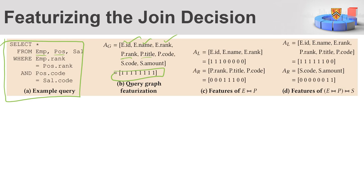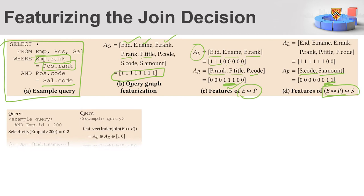The participating attributes from the left hand side, like AL, where you have in the left, you can see the employees, right hand side position. So in the left hand side, employee ID, employee name, and employee rank, these three are 1, others are not present. For post, rank, title, and code, these three are also present here. So this can be considered as E join P in the features. And if we now add the S, the salary, the S comes with the salary code and salary amount. So 1 and 1, and they can also be joined here.